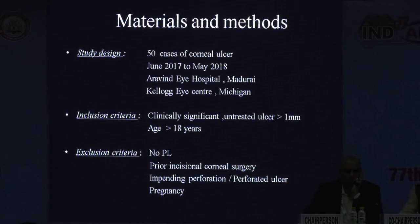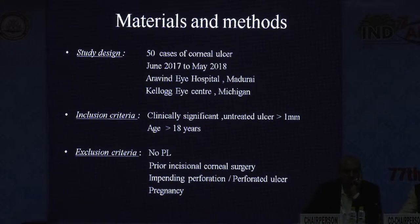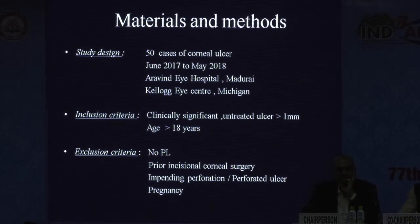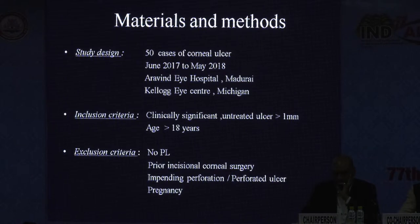A sample of 50 cases recruited from Aravind Eye Hospital at the cornea clinic was studied over a period of one year. Patients were stratified based on age and gender and the standard of care was the same in all of them. Any patient more than 18 years with a clinically significant untreated corneal ulcer of more than 1 mm in the greatest linear dimension was included. They were excluded if they had no perception of light, prior corneal surgery, impending perforation or perforation, and if they were pregnant.